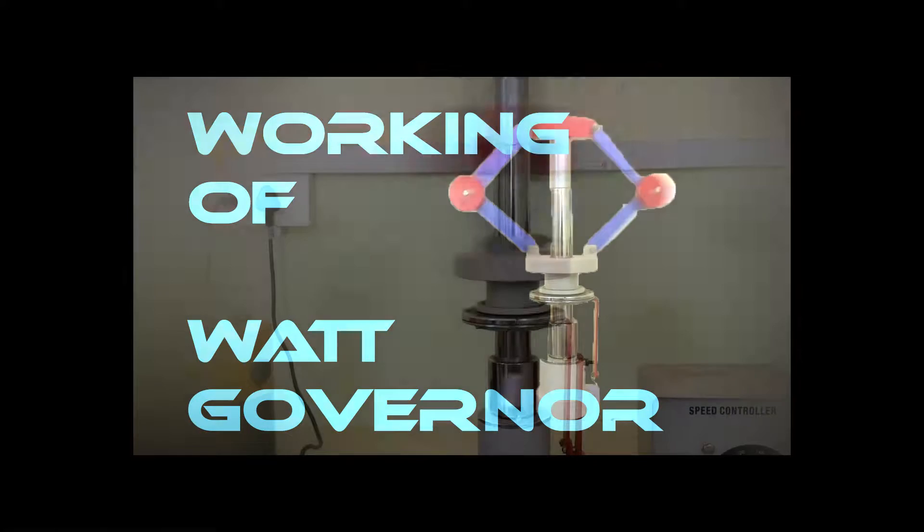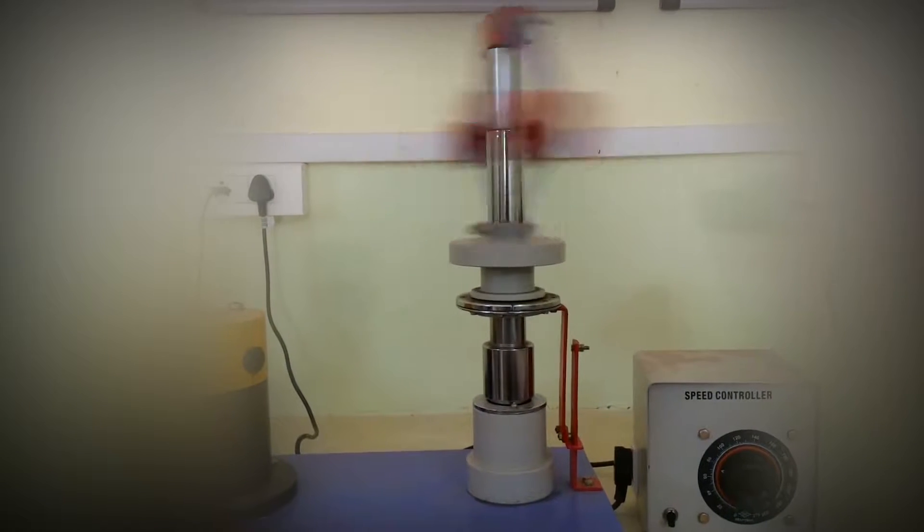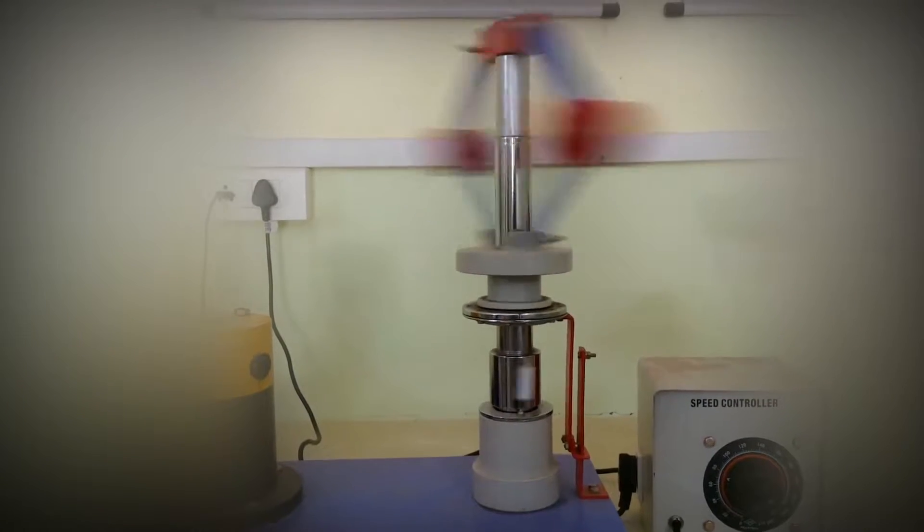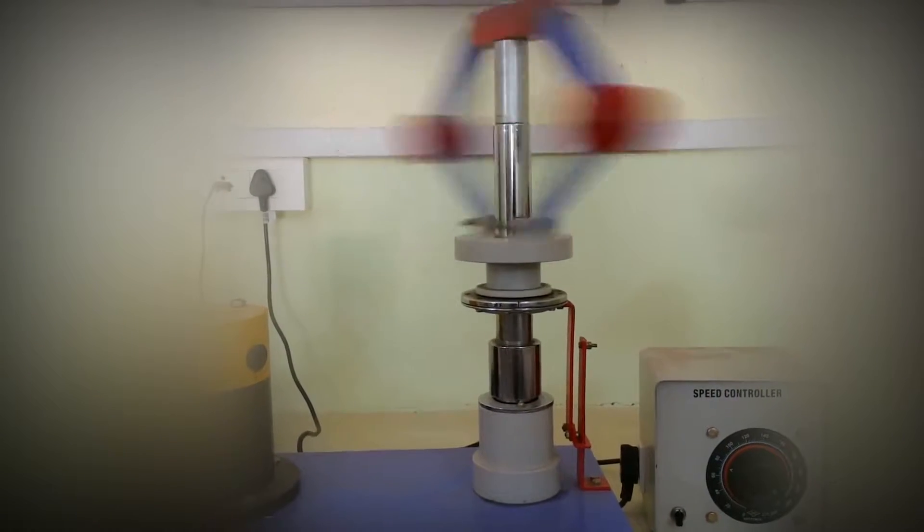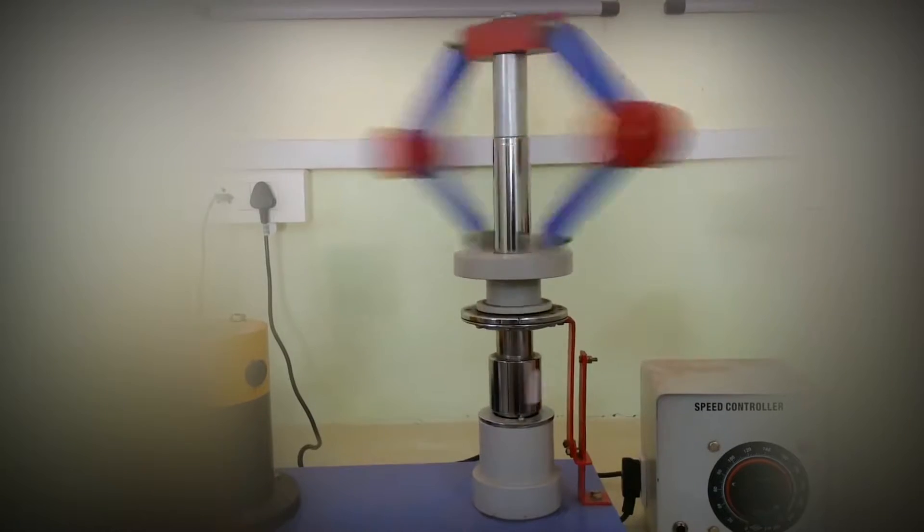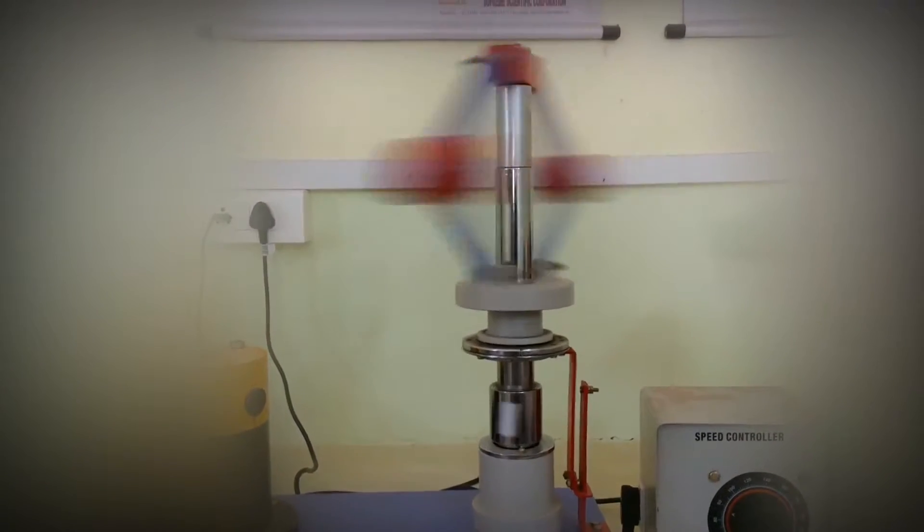Hello friends, today we will learn about the working of the Watt governor. Basically, the function of a Watt governor is to regulate the mean speed of an engine. When there is variation in the load, for example when the load of an engine increases, it is necessary to increase the working fluid.